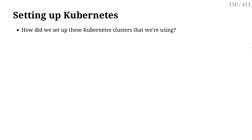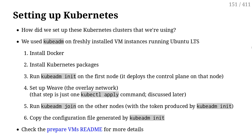First, how did we obtain these clusters? We used kubeadm. kubeadm is one of the many ways to get a cluster up and running. What we did is take a bunch of VMs using Ubuntu LTS, just because I'm a Debian person, and Ubuntu is Debian but with an LTS cycle, so that works great. Then we installed Docker, then we installed the Kubernetes packages — it's just a bunch of apt-get installs.